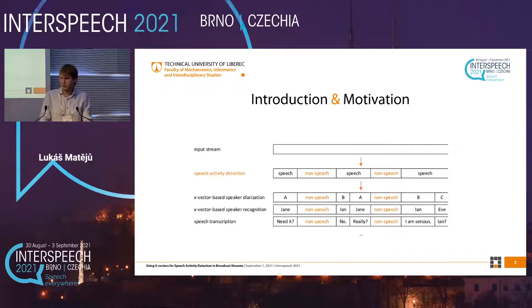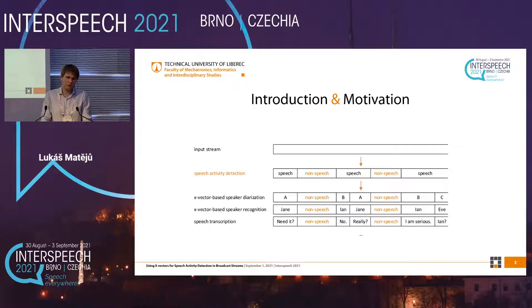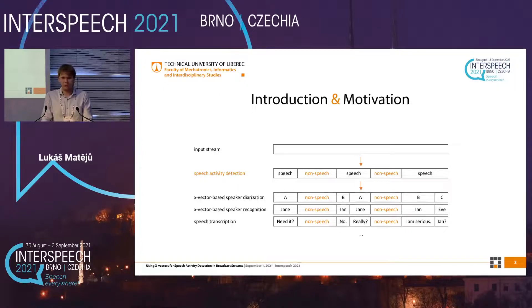We are developing a 24/7 monitoring system for broadcast streams, processing a lot of streams. We first start with speech activity detection to filter out non-speech parts. After that, on the speech parts, we provide tasks such as speech transcription or X-Vector-based tasks such as speaker diarization or speaker recognition. In this work, we would like to unify our input features to be X-Vectors so we can save some computational demands.